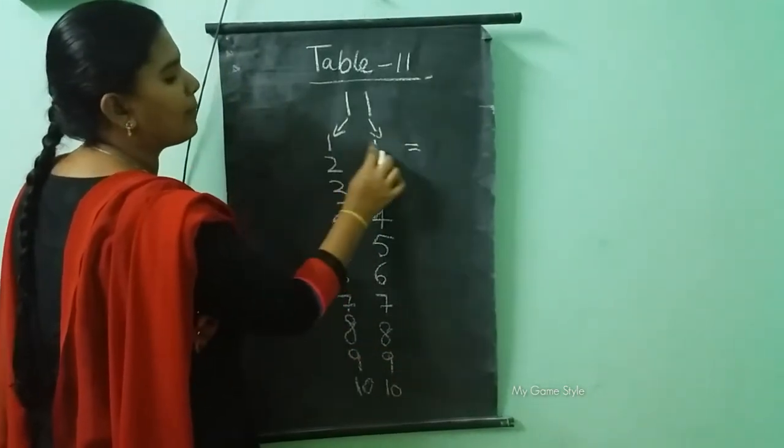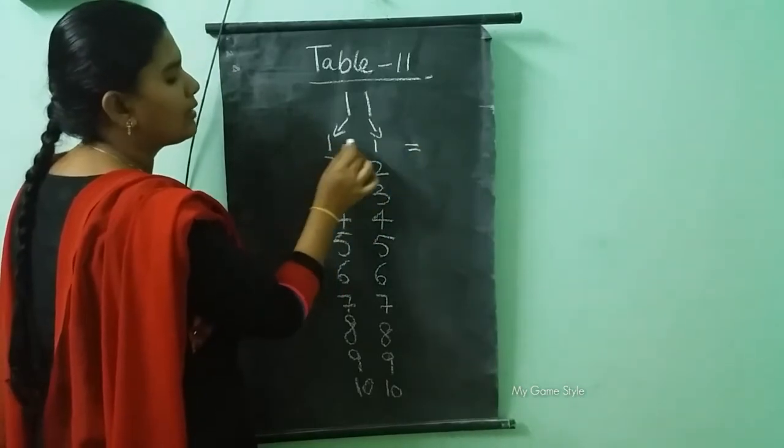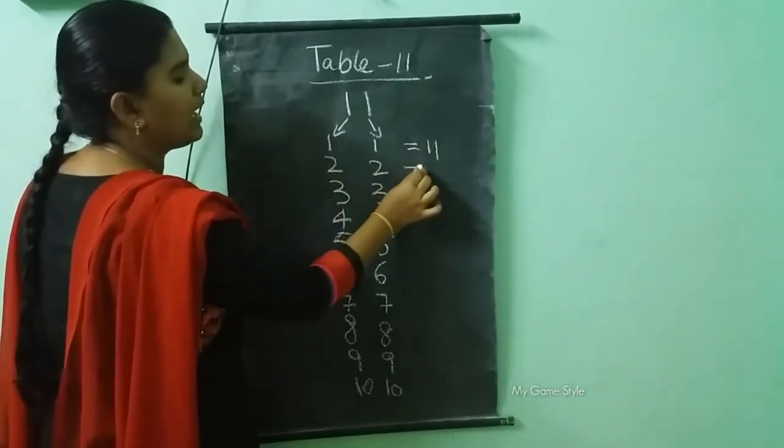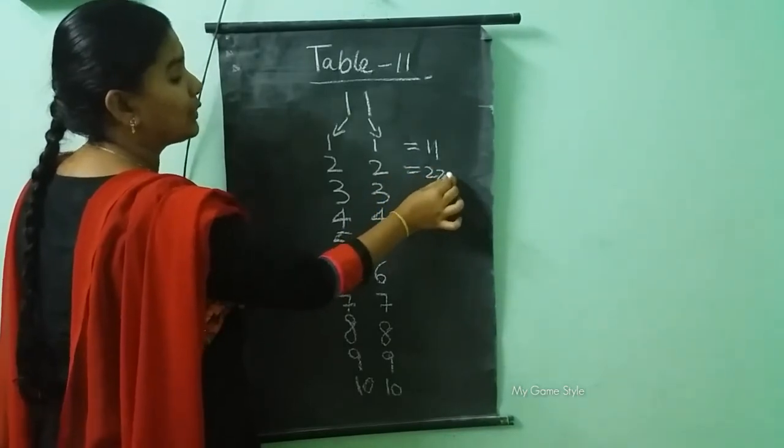And combine these two numbers and write here. 1, 1, 11. 1, 2, 2, 12. 22. Sorry 22.